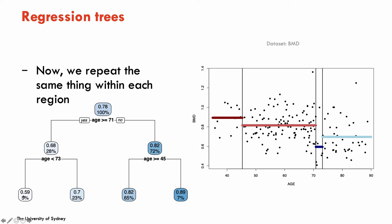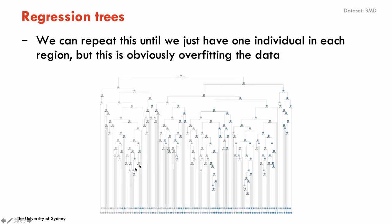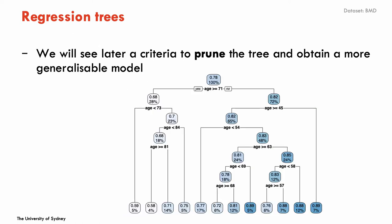I could continue splitting subgroups all the way down to one individual at each end node, but this would clearly be overfitting the data. Such a tree is really optimized to classify every individual in the sample correctly but will have poor generalization because it's tuned to the sample. A better approach is to use some pruning technique — cutting branches of the tree to produce a more generalizable model that is not overfitting.